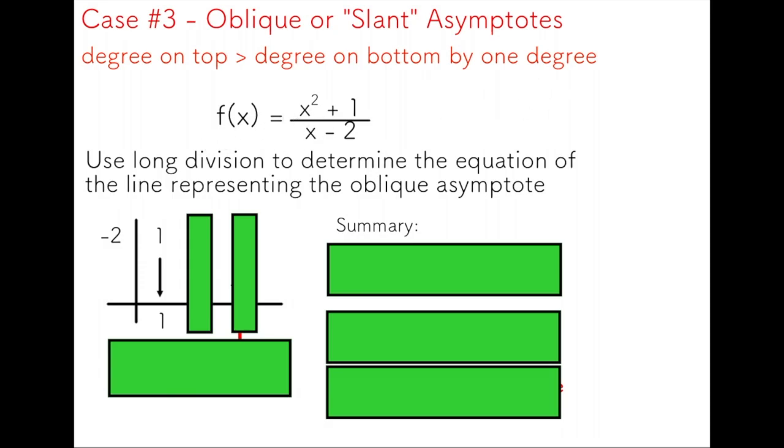So how do we find out what the oblique asymptote will be? If you read this function, it literally says x squared plus one divided by x minus two. This should give us a pretty good clue as to how to proceed.